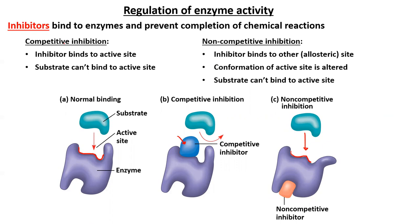We can also discuss what we call inhibitors and activators, which are going to regulate the rate of chemical reactions or enzyme activity. The inhibitors would bind to enzymes and prevent completion of chemical reactions. There are two possible types of inhibitors. We have the competitive inhibitors. The competitive inhibitor will bind to the active site of the enzyme, preventing the substrate from binding and therefore preventing the chemical reactions from taking place.